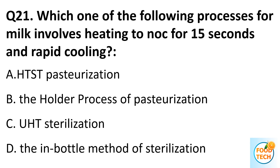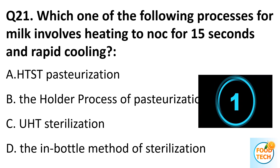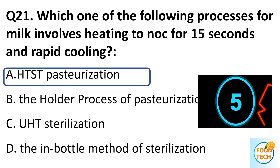Question 21. Which one of the following processes for milk involves heating to high temperature for 15 seconds and rapid cooling? A. HTST Pasteurization. B. The Holder process pasteurization. C. UHT sterilization. D. In-bottle method of sterilization. Answer A. HTST Pasteurization.